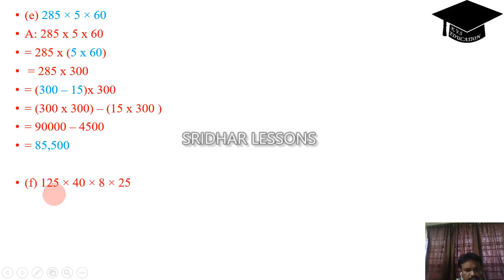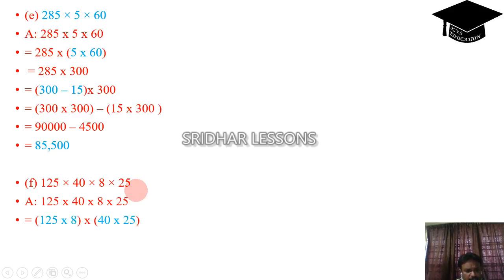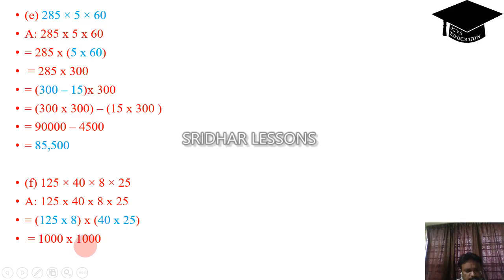Next: 125 into 48 into 25. We can rearrange as (125 into 8) into (40 into 25). 125 into 8 equals 1000, and 40 into 25 equals 1000. So 1000 into 1000 is 10 lakhs. This is how we simplify problems with suitable rearrangement.